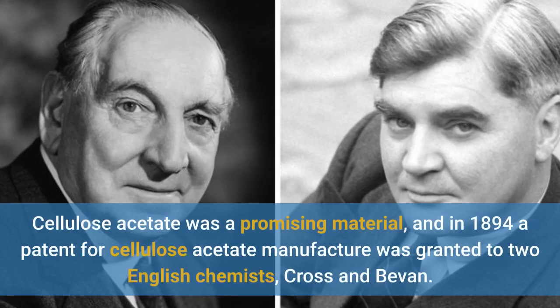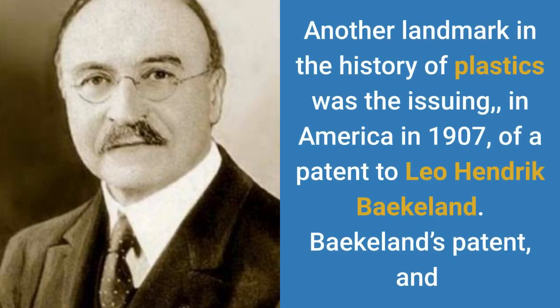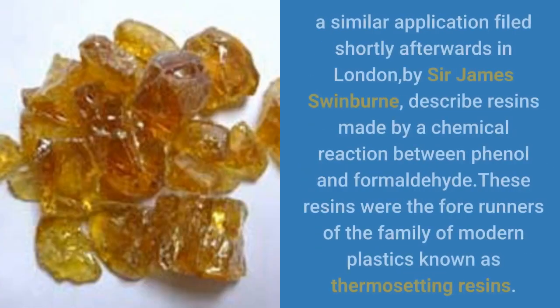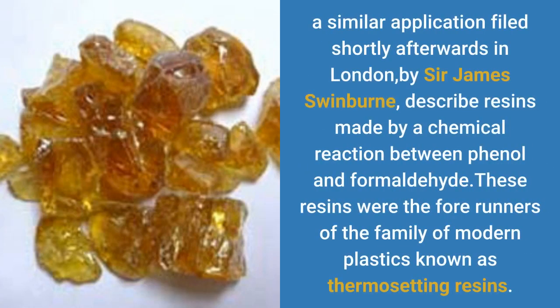Cellulose acetate was a promising material, and in 1894 a patent for cellulose acetate manufacture was granted to two English chemists, Cross and Bevan. Another landmark in the history of plastics was the issuing, in America in 1907, of a patent to Leo Hendrick Bakeland. Bakeland's patent, and a similar application filed shortly afterwards in London by Sir James Swinburne, describe resins made by a chemical reaction between phenol and formaldehyde. These resins were the forerunners of the family of modern plastics known as thermosetting resins.